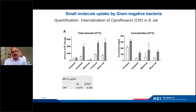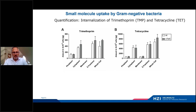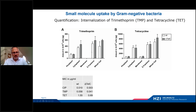You can then compare compound accumulation with your MIC data. Here, we have about three times more compound in the delta-tolC strain than in the wild-type strain. This nicely reflects the differences in MICs. We did this also for other standard antibiotics. For trimethoprim, there's a little bit more in the delta-tolC strain than in the wild-type, and the MIC is a bit lower — again, a nice match.